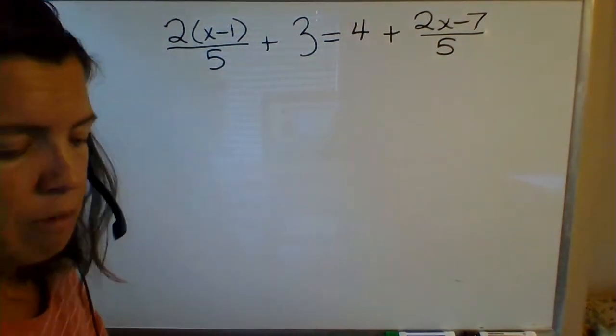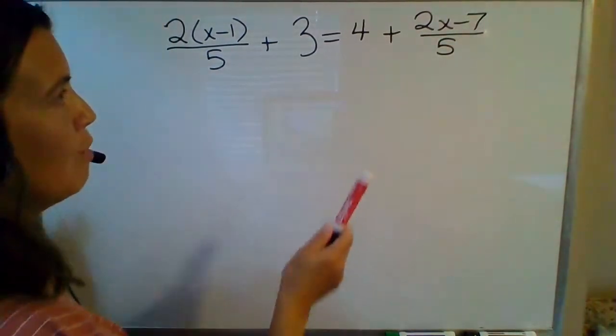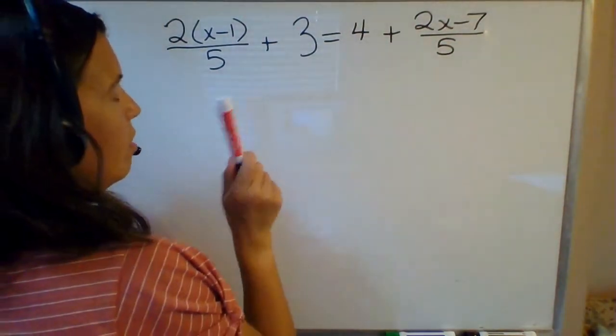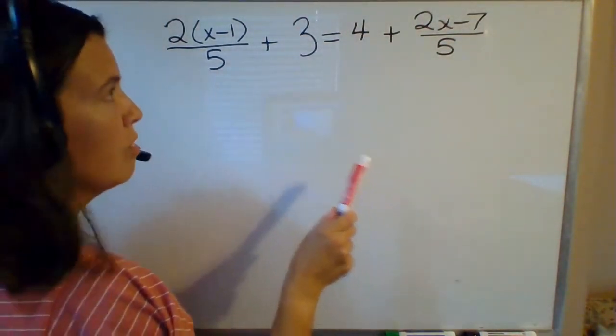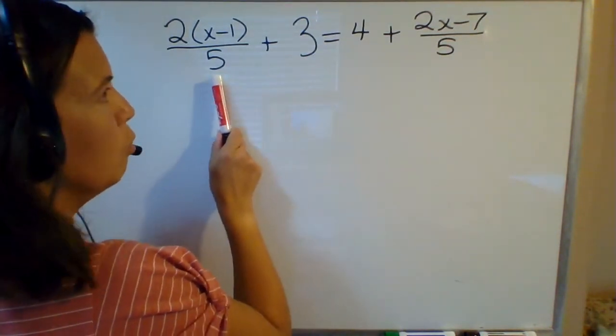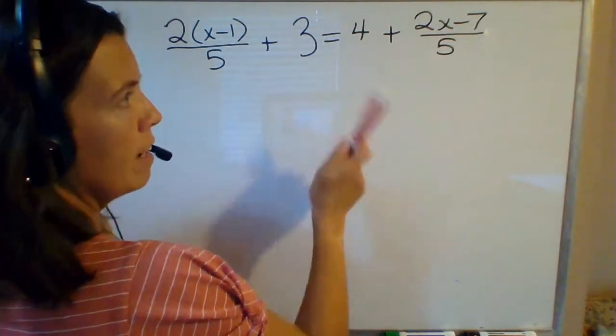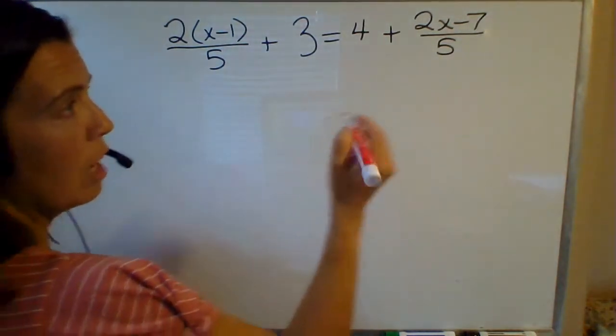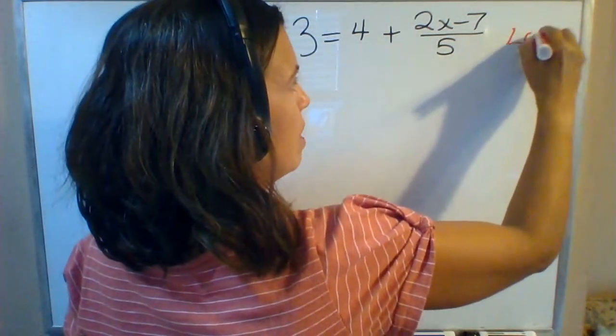The first thing I would notice is that the equation involves fractions, so I would like to clear the denominators. That means I should look for the least common denominator. Well in this case I only see 5 in either denominator, so the least common denominator is 5.